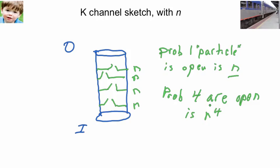That's where the n fourth comes from. Now, what is n? Well, we haven't gotten there yet. What the probability is, but once we know it, we know how to find out what the probability is that the whole channel is open.